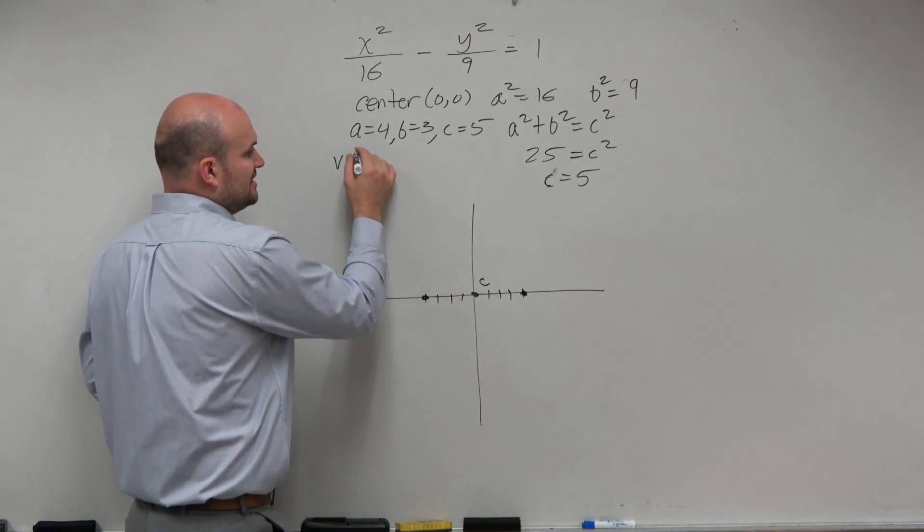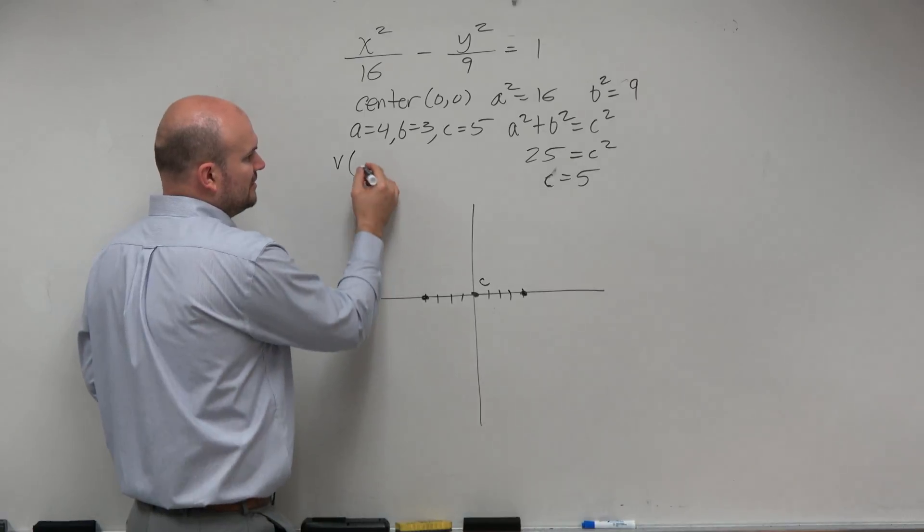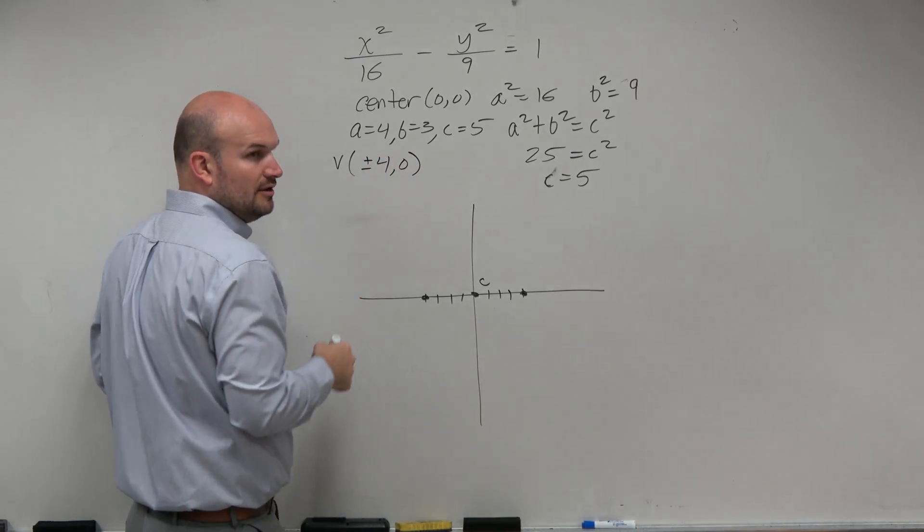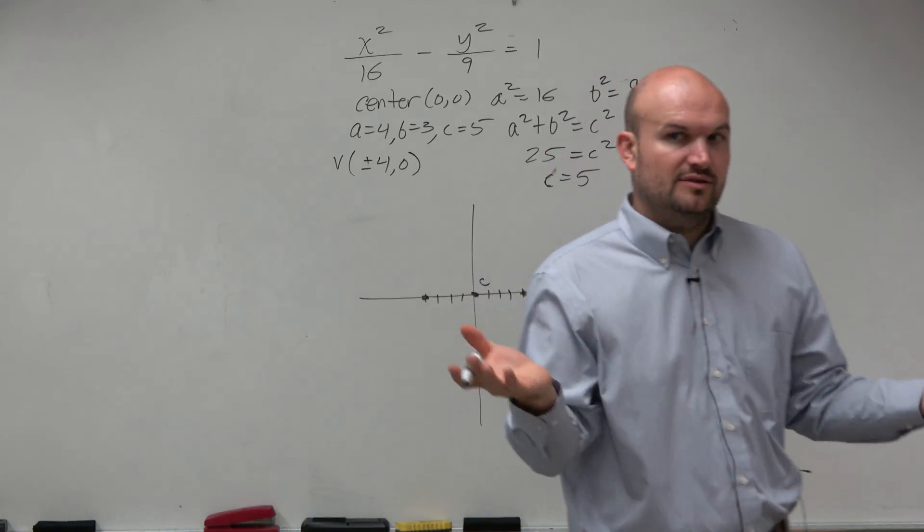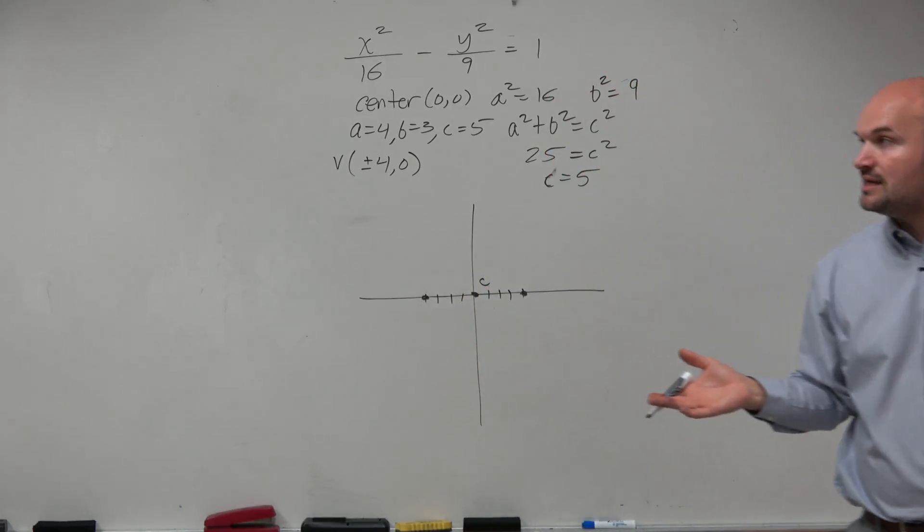So really, my vertices, I'm going to do a simplified version here, is really plus or minus 4 comma 0, right? You're going to the right four, you're going to the left four, and the y-coordinate is always 0 because it lies on the x-axis.